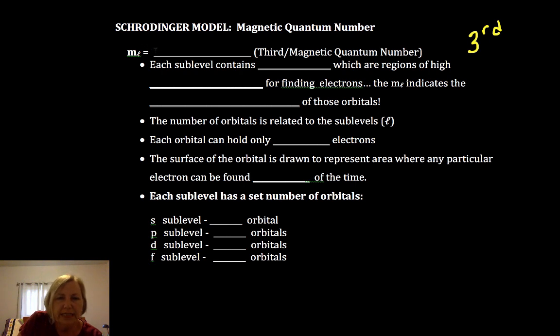The third one is called the magnetic quantum number, and unfortunately it's also called an orbital. I really like that a lot of places are shifting to the word cloud.